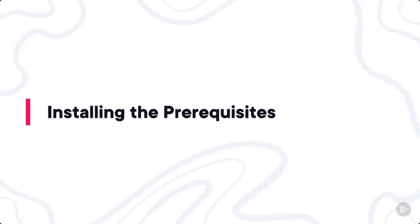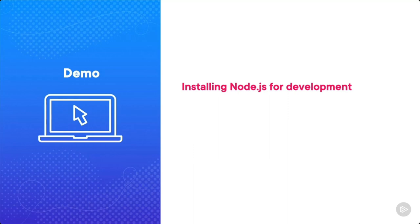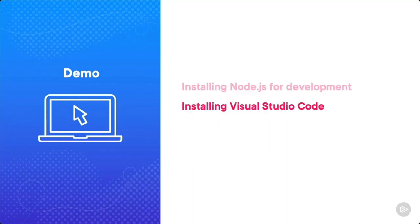Now I'm going to walk you through installing the prerequisites for this course — you'll need these items if you want to follow along with the examples. Over the course of this demo, we'll be working through a few things. First, we will be installing Node.js for development; once you have this installed, you'll be able to execute code using the Node.js engine. Then we'll be installing Visual Studio Code, which is an integrated development environment, or IDE — a tool you will use to write and run your JavaScript code.